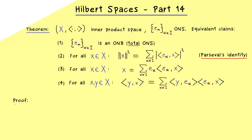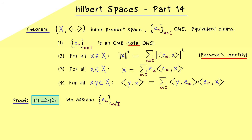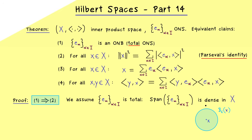For the proof, we have to combine some implications. Let's start with the most important one, namely that an ONB implies Parseval's identity. What we assume now is that our given ONS is total. By definition this means the set of all possible linear combinations we can form is dense in X. This means that for any point x in X and any epsilon ball around it, you always find an element in the span that lies inside the epsilon ball.